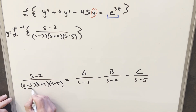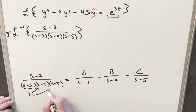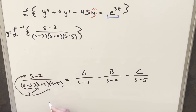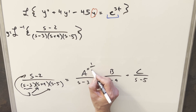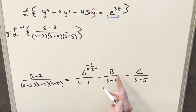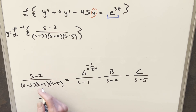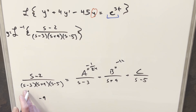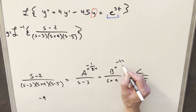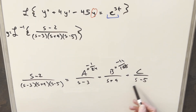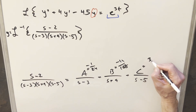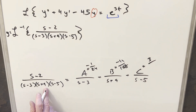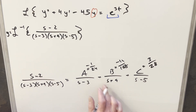I'll use the cover-up method to solve for the three constants. For a, plug in s equals 3 and cover up the s minus 3 factor: numerator gives 3 minus 2 equals 1, denominator gives 3 plus 9 times 3 minus 5 equals 12 times negative 2 equals negative 24. So a equals negative 1 over 24. For b, plug in s equals negative 9: numerator gives negative 11, denominator gives negative 12 times negative 14 equals 168. So b equals negative 11 over 168. For c, plug in s equals 5: numerator gives 5 minus 2 equals 3, denominator gives 5 minus 3 times 5 plus 9 equals 2 times 14 equals 28. So c equals 3 over 28.